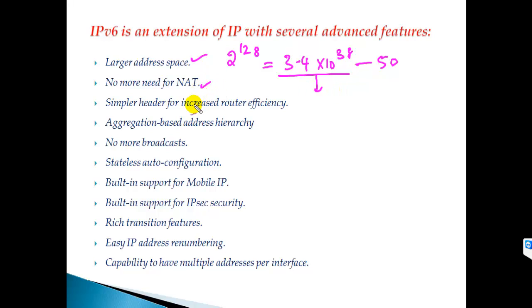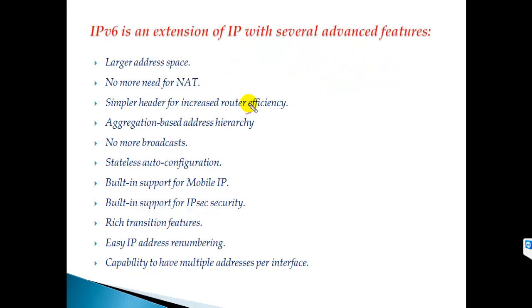With such a large address space, network address translation is not required. Up to now there is no need for NAT in IPv6, and even if a shortage occurs in the future, it won't be for at least 50 or 60 years. The header format is more simplified in IPv6, which increases efficiency on routers, and the addressing is designed in an aggregation-based hierarchy.